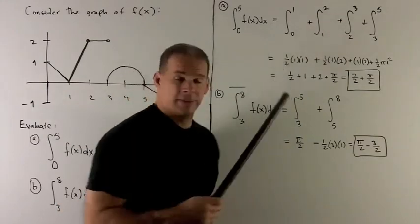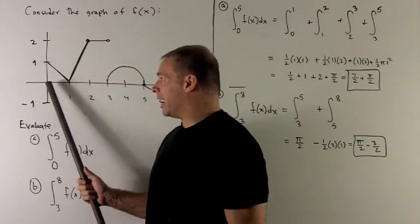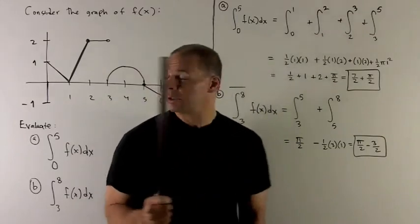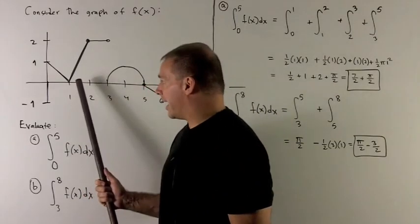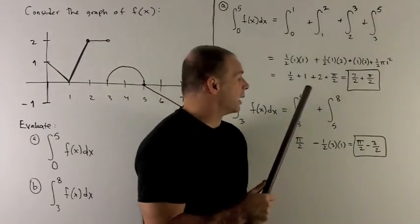The first region is a triangle with base 1 and height 1, so we have one-half base times height. For my second triangle, I have base 1 and height 2, so one-half base times height.